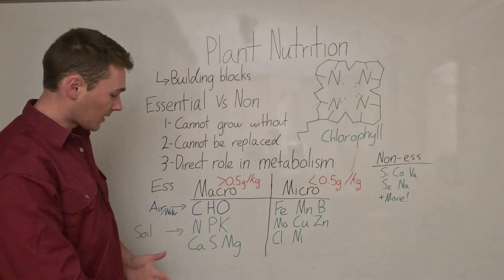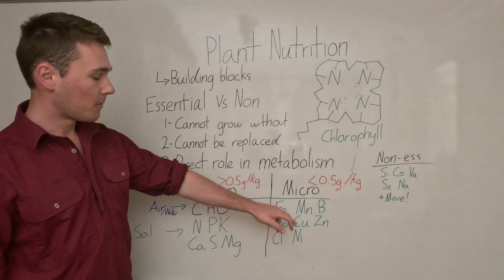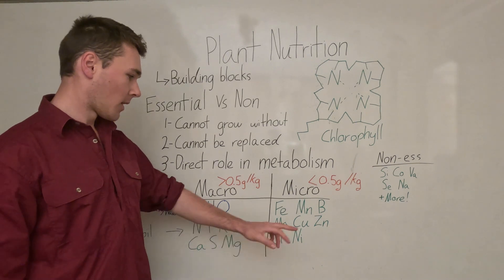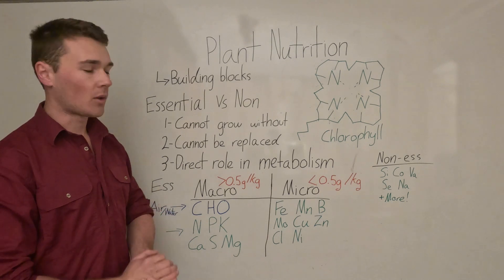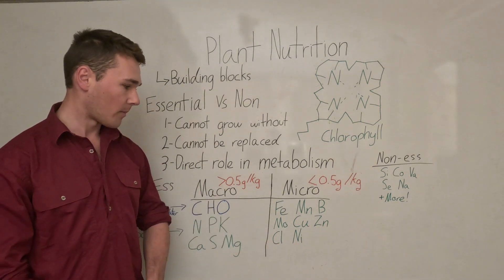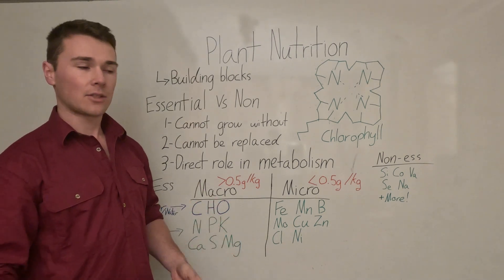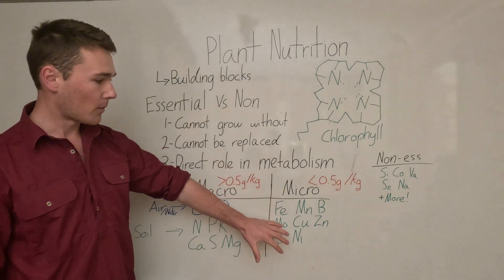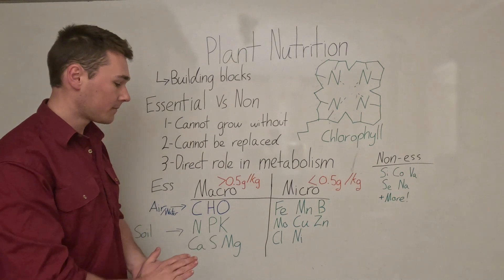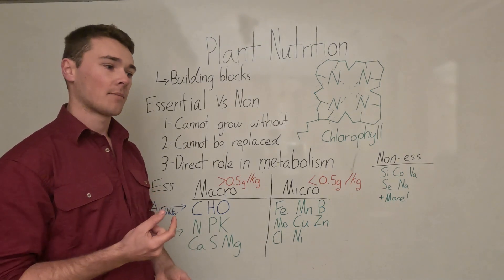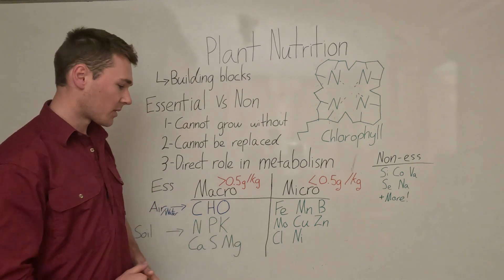On our micros we have our iron, manganese, boron, molybdenum or molly for short, copper, zinc, chloride, and nickel. You can get fertilizer for all of these - I think nickel is a bit difficult because it's a heavy metal. Nevertheless, if you're deficient in any of these it's a very easy fix. You just apply the fertilizer either as a foliar which is better for your microbes, or you can apply them as a granule like our NPK.